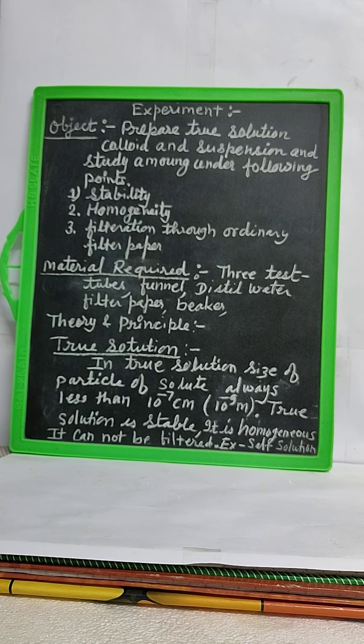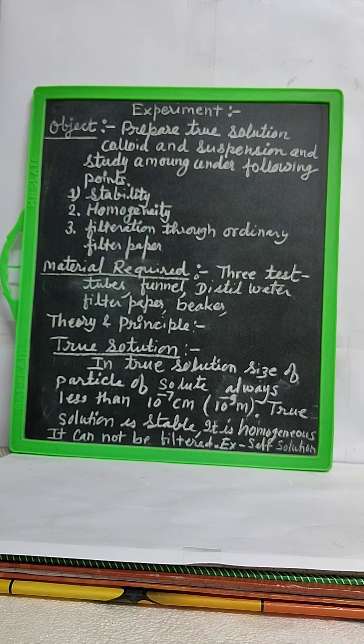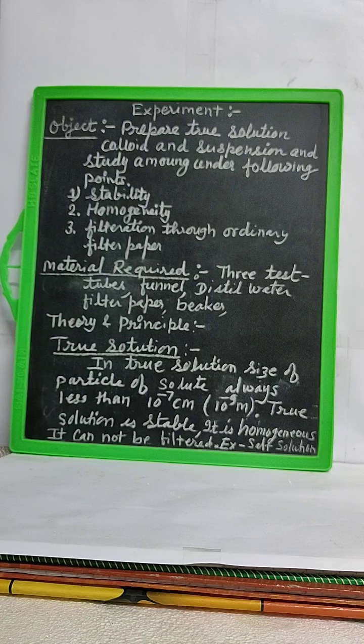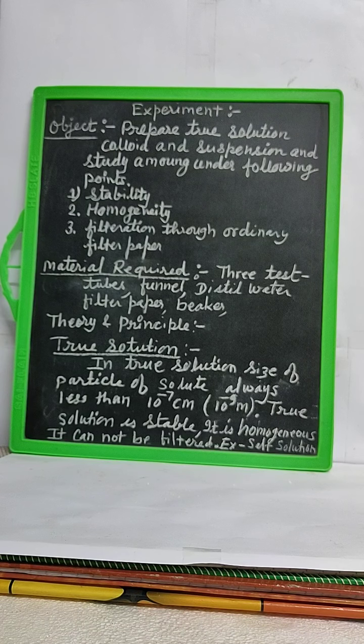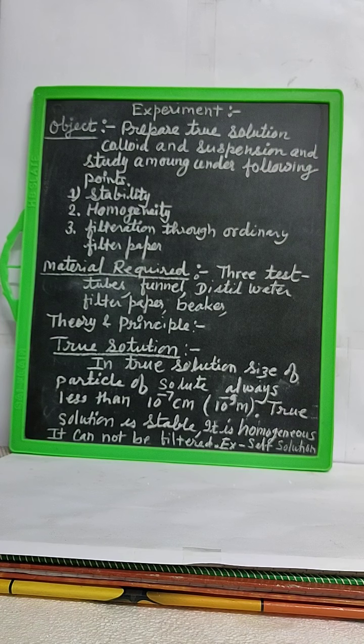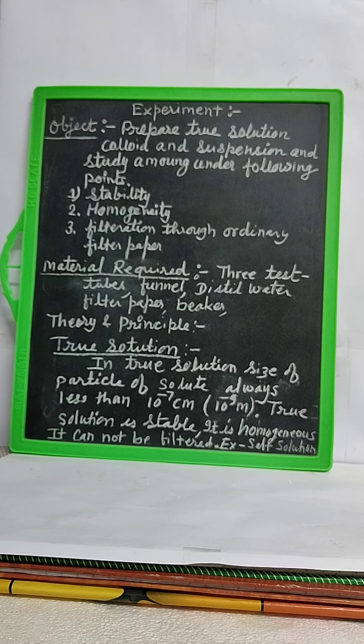In a true solution, the particle size of solute is always less than 10^-7 cm. True solutions are stable and homogeneous. They cannot be filtered through ordinary filter paper. For example, salt solution.